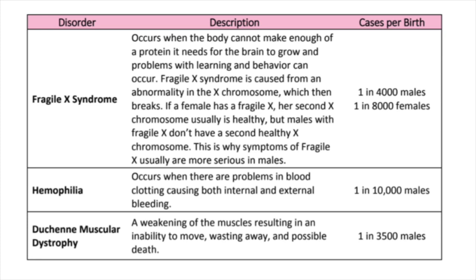Hemophilia occurs when there are problems in blood clotting, causing both internal and external bleeding. Cases per birth: 1 in 10,000 males. Duchenne muscular dystrophy: a weakening of the muscles, resulting in an inability to move, wasting away, and possible death. Cases per birth: 1 in 3,500 males.